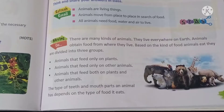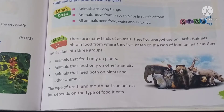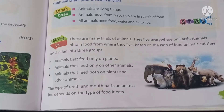There are many kinds of animals we see in our surroundings; they live everywhere on earth. Animals obtain their food from where they live. Based on the kind of food animals eat, they are divided into three groups.